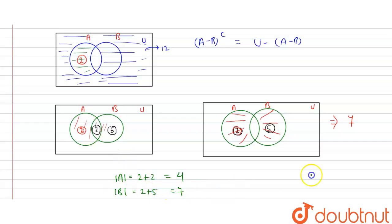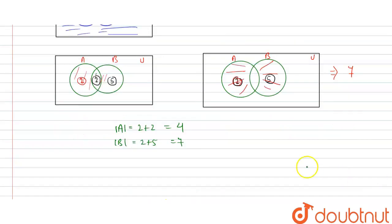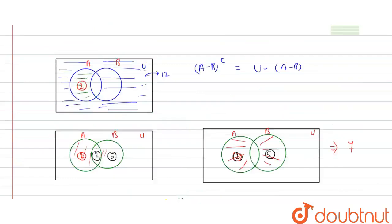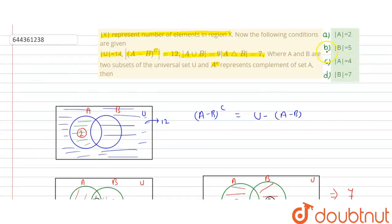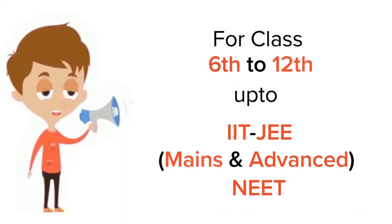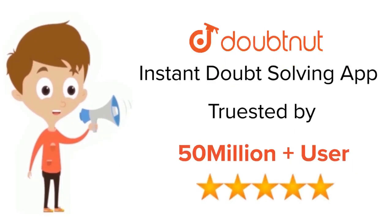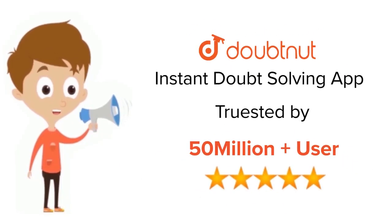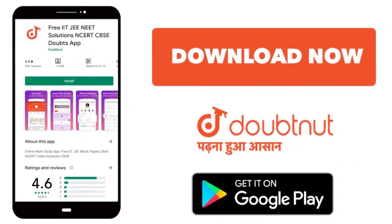So the answers are mod A equals 4 and mod B equals 7, making options C and D the correct answers. For class 6 to 12, IIT JEE and NEET level problems, trusted by more than 5 crore students — download the Doubtnut app today.